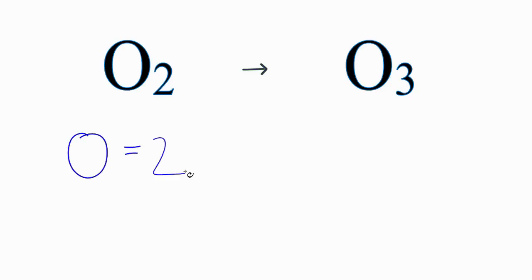we have 2, and on the product side, we have 3. So this equation is not balanced. We don't have the same number of oxygens on each side.